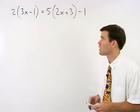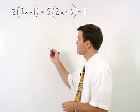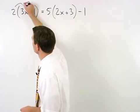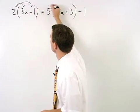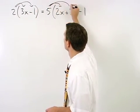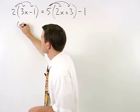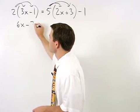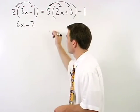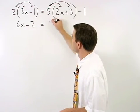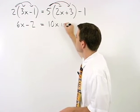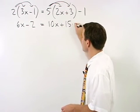In this equation we start by distributing through the parentheses on both sides. On the left we get 6x minus 2 and on the right we get 10x plus 15 minus 1.